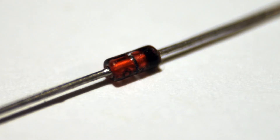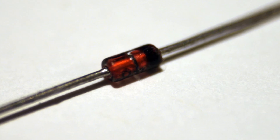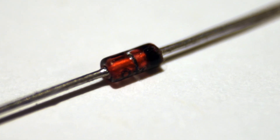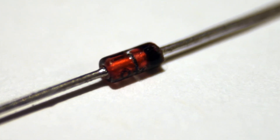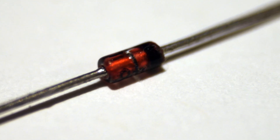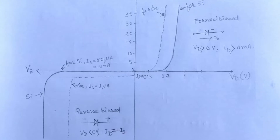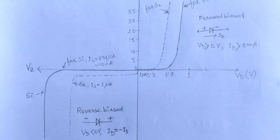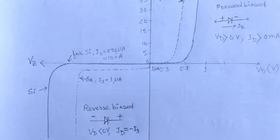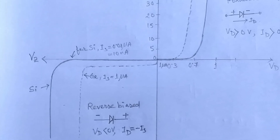Practical Zener diodes have Zener potential in the range of 1.8V to 200V, with a power rating of 0.25W to 50W. Because of its higher temperature capability, silicon is more preferred in the manufacture of Zener diodes.